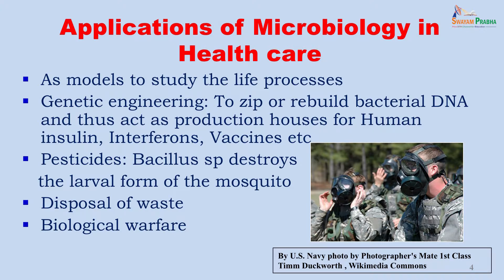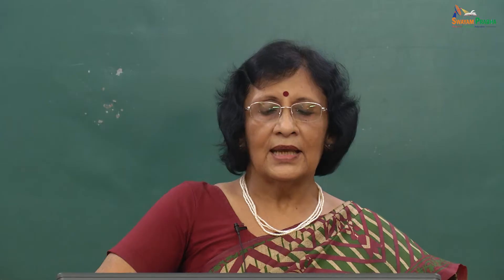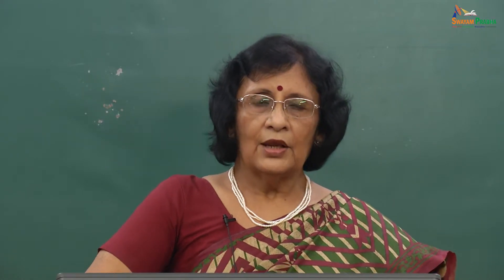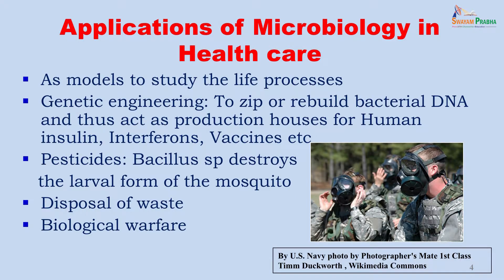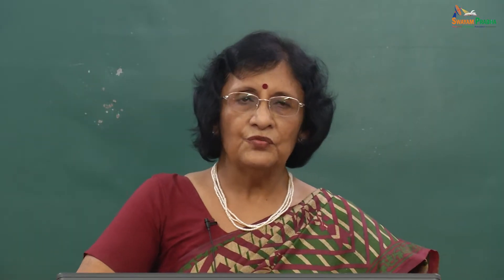Microbes have also been used to improve the environment by acting as pesticides, killing the larval form of the mosquito. They can also be used for disposal of waste — Pseudomonas, Chromobacter, and Flavobacter have all been used to treat biological solid and liquid waste. The organism has recently been in the news for biological warfare. The Bacillus anthracis has been used for biological warfare in the very recent past and the microbe is often referred to as the poor man's nuclear bomb.